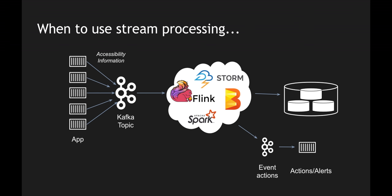To summarize the stream processing use case: multiple applications publish accessibility information into a common topic, from which real-time messages are consumed, processed, and checked for anomalies. All messages are stored, filtered, converted into a different format, and stored in a database. Actionable events are also published to a separate topic for alerting or taking actions. The pipeline in which these messages are processed in real time is called a stream processing pipeline.